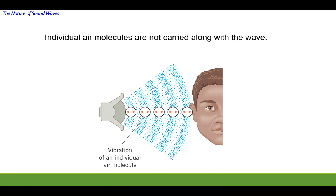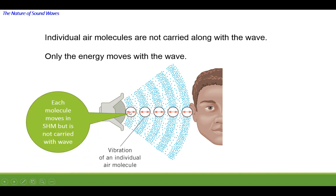Individual air molecules are not carried along with the wave. They actually vibrate in place. They vibrate with whatever the source is moving at. So what's happening here is the source of the speaker is moving in and out, causing air molecules next to it to move in and out. But those individual molecules aren't carried with the wave. They only send their message to the next molecule which vibrates back and forth, which sends it to the next one, eventually moves your eardrum in and out.